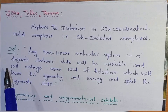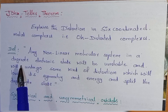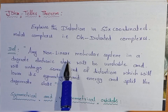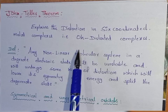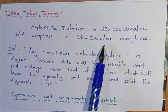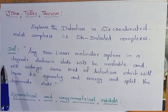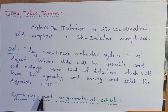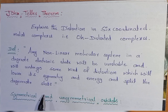Students, I am going to discuss about the Jahn-Teller theorem. This Jahn-Teller theorem generally explains the distortion in six-coordinated metal complexes — that means, in octahedral complexes, the distortion and how it goes on to get stability. The definition of Jahn-Teller theorem: any non-linear molecular system in a degenerate electron state will be unstable and will undergo some kind of distortion which will lower its symmetry and energy and split the degenerate state.